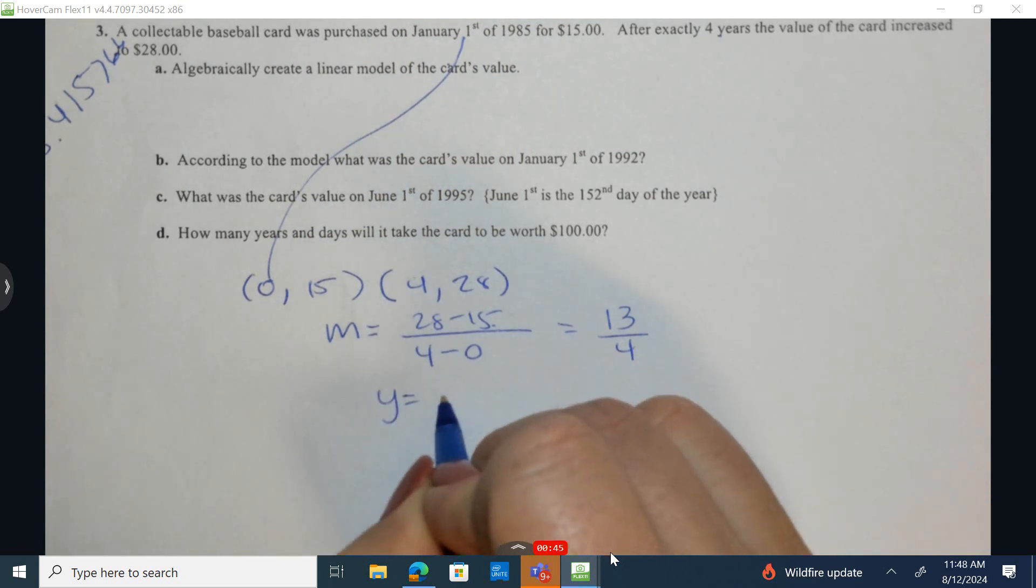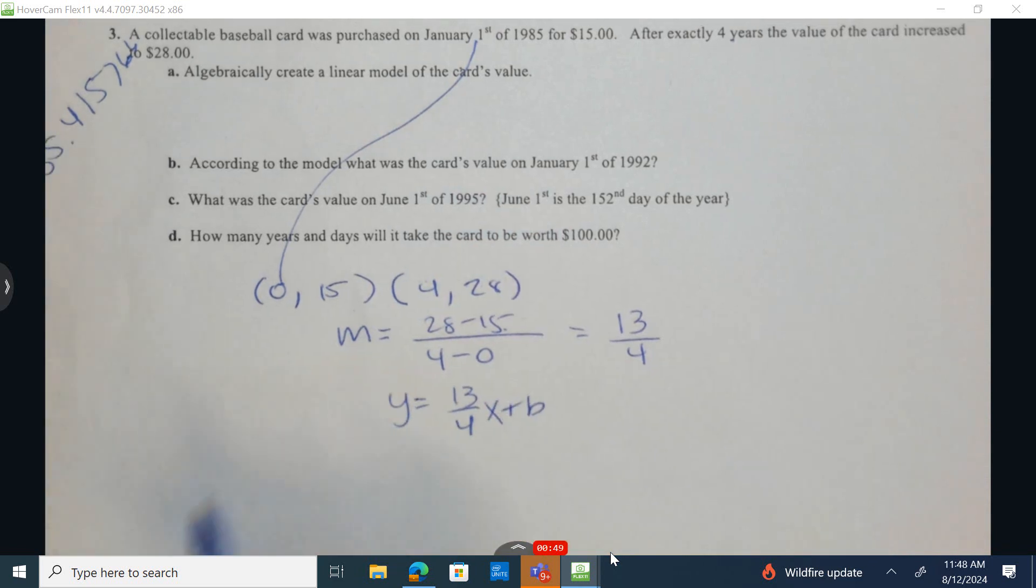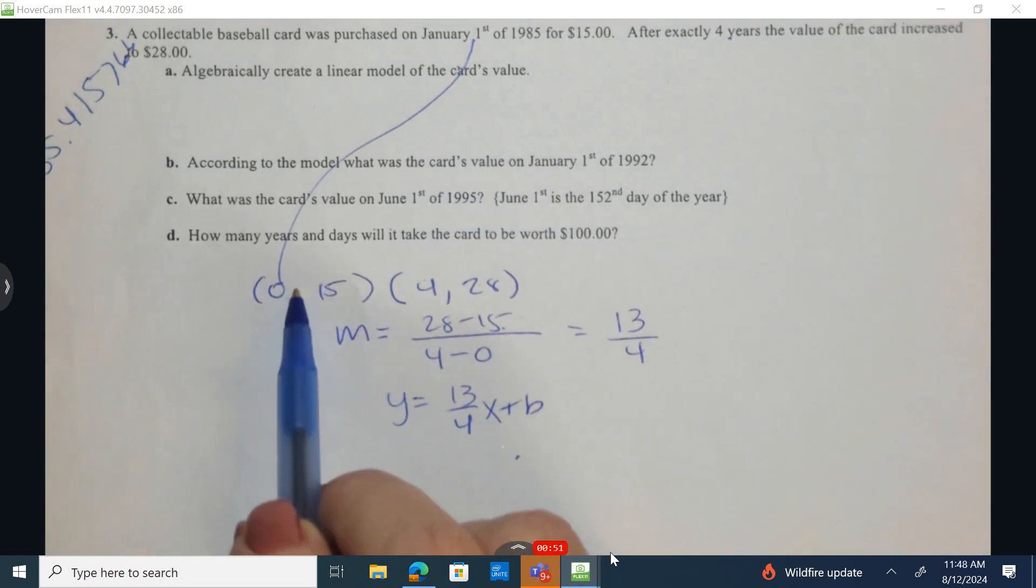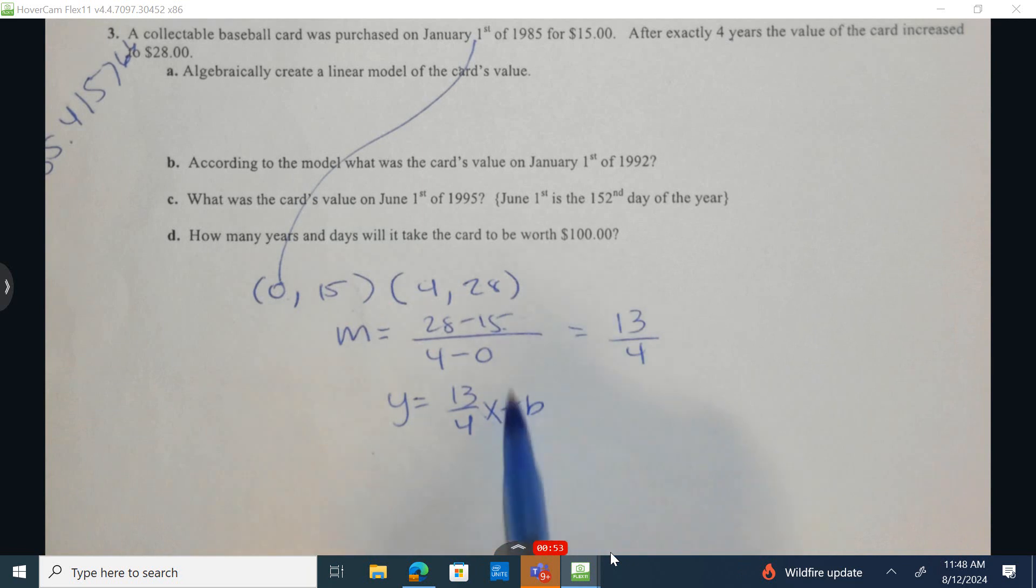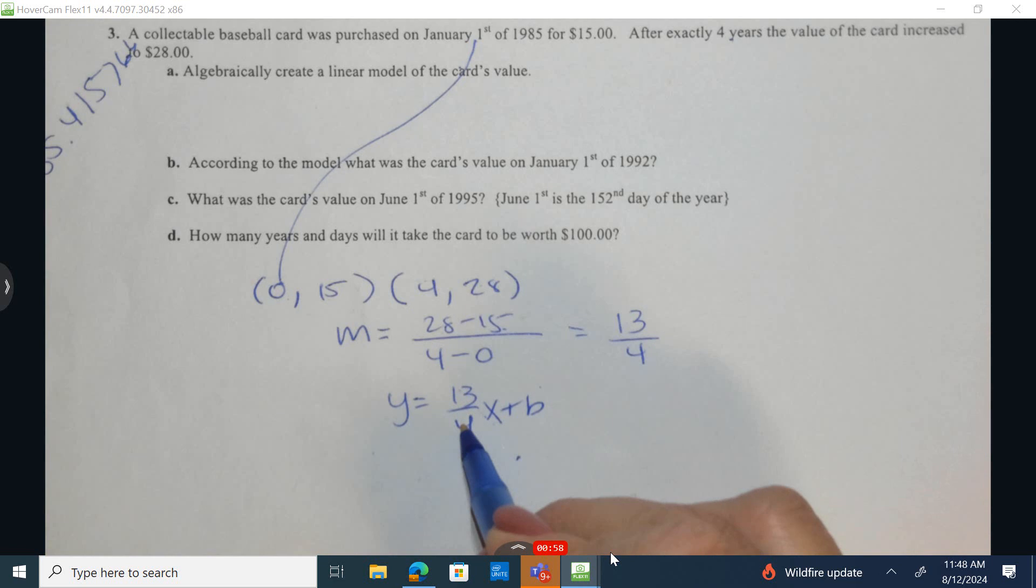So we have y equals, there's your slope, and then generally we'd say take one of the ordered pairs, plug in for the x, plug in for the y, and solve for b. But in this case, if we plug in 0 for x, 13 fourths times 0 is simply 0, and b would equal 15. So y equals 13 fourths x plus 15.